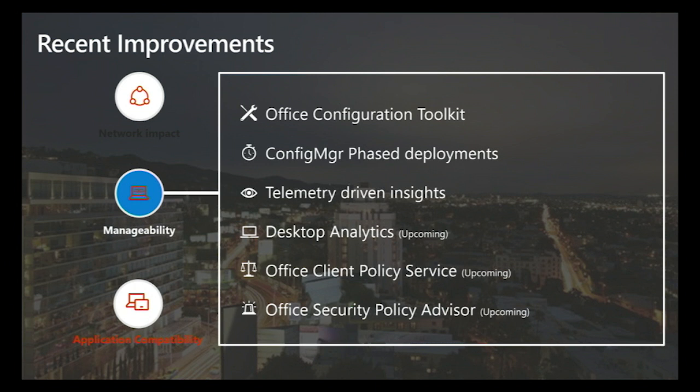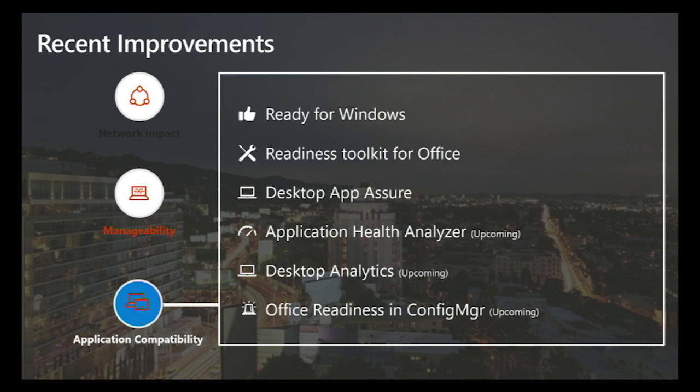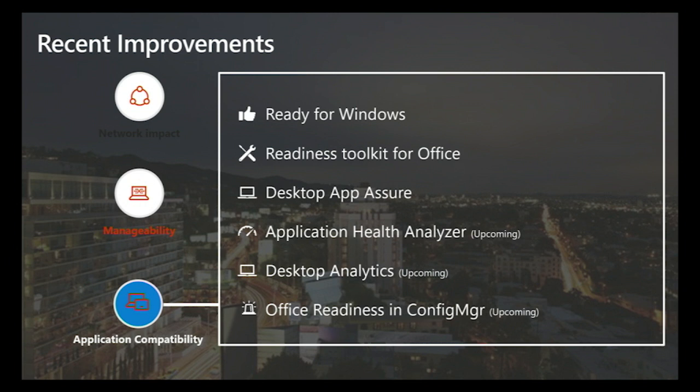We've also got upcoming services like the Office Security Policy Advisor, Office Client Policy Service, and Desktop Analytics. On the application compatibility front, we've introduced services such as Ready for Windows — recently rebranded to Ready for Modern Desktop — which gives you compatibility insights into your applications and Office add-ins. We've introduced the Readiness Toolkit for Office, programs like Desktop App Assure through our Fast Track program where if an app is broken due to a compatibility issue with the OS we'll help fix it for free, our Application Health Analyzer Tool, and Office Readiness directly in Configuration Manager and Desktop Analytics.